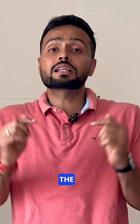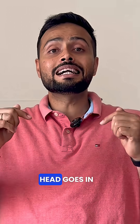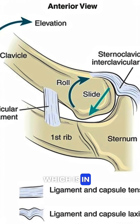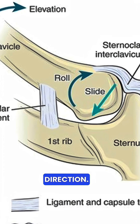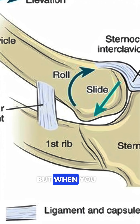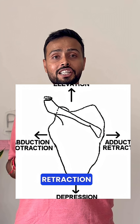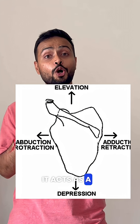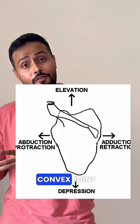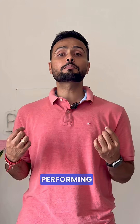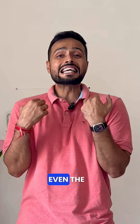Basically, when you're performing elevation, the clavicular head goes in the downward direction, which is the opposite direction — following the convex-concave rule. But when you are performing protraction and retraction, it acts as a concave-convex joint.